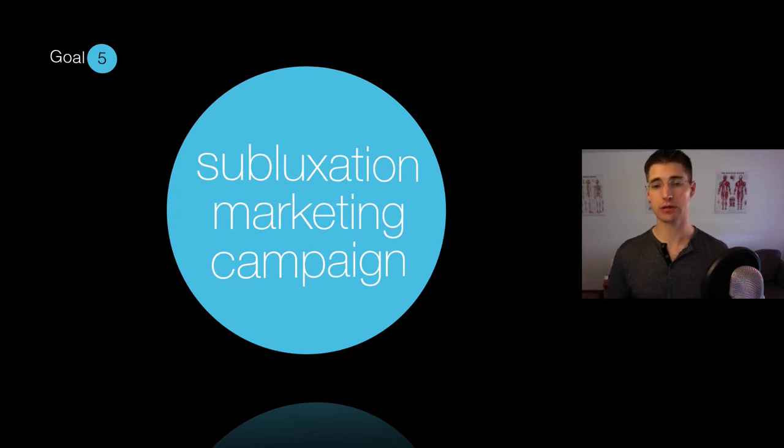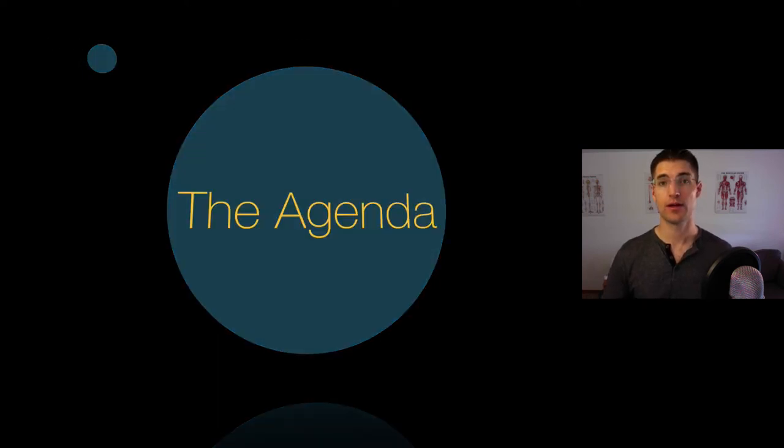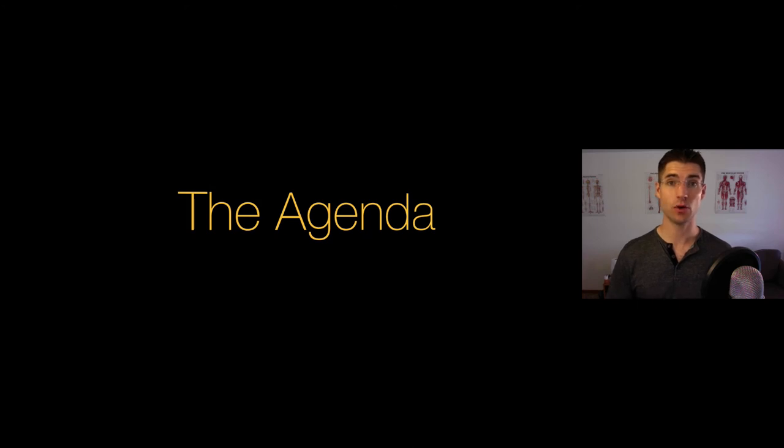And number five, really the big goal in the end is to create a marketing campaign where we involve chiropractors, students, patients, legislators, policy makers, and the general public to make them aware of subluxation and what needs to be done to correct it by utilizing chiropractic adjustments. So that's the agenda. Those five goals are kind of the roadmap for the future of chiropractic research.